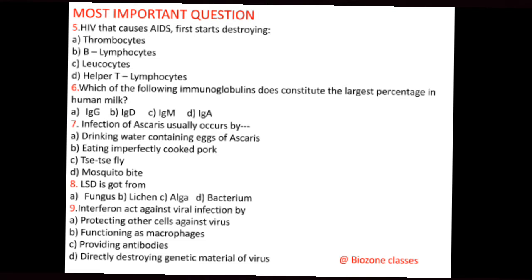Question number 6: Which of the following immunoglobulins constitutes the largest percentage in human milk? A. IgG, B. Immunoglobulin D, C. Immunoglobulin M, D. Immunoglobulin A. The correct option for question number 6 is D, that is Immunoglobulin A.